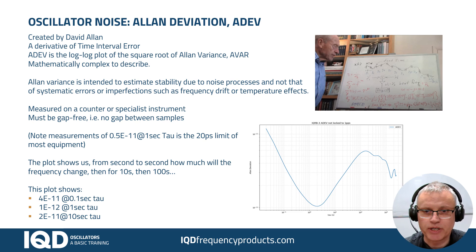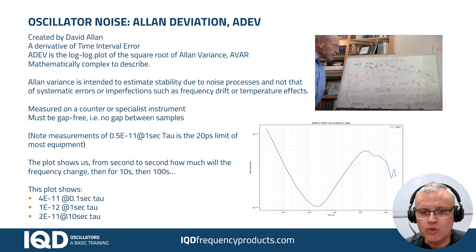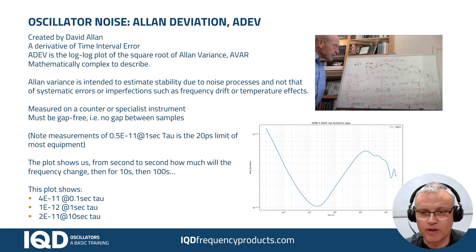If you're using an older counter, just be aware of that. One other thing we would say from experience is that a lot of counters have a noise floor of 20 picoseconds, which equates to 0.5×10⁻¹¹ at one second tau on an Allan Deviation plot. So if you're looking at an Allan Deviation plot and you notice that at one second tau it has a figure of 0.5×10⁻¹¹, there's a fairly reasonable chance that that's caused by the instrument rather than the oscillator, and the oscillator is in fact better than that.